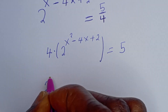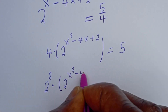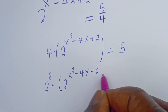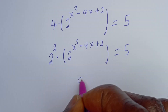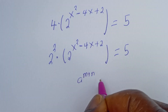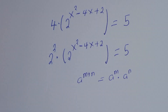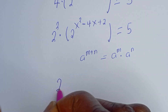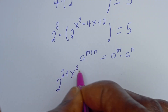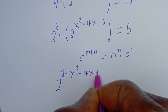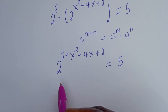Now, 4 can be written as 2 squared, multiplied by 2 to the power of s squared minus 4s plus 2, is equal to 5. Take note that if you have a to the power of m plus n, this is equal to a to the power of m multiplied by a to the power of n.